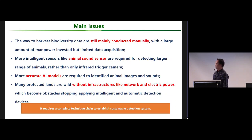There are still some problems. The way to harvest biodiversity data is still mainly conducted manually with a large amount of manpower invested but limited data produced. We need more intelligent sensors like animal sound sensors for detecting larger ranges of animals, rather than only infrared trigger cameras. More accurate AI models are required for the wild environment. Many protected lands are remote with no network and no power, which becomes an obstacle for applying intelligent and automatic detection.